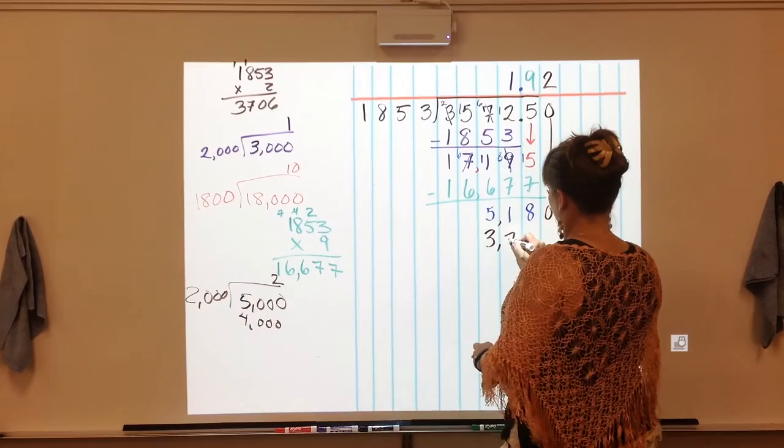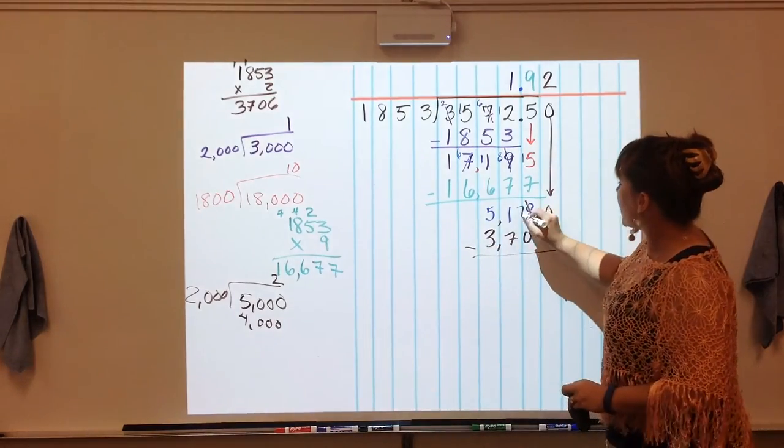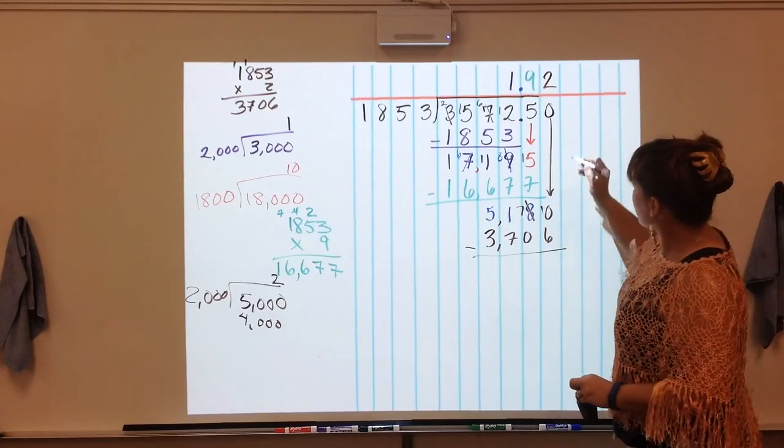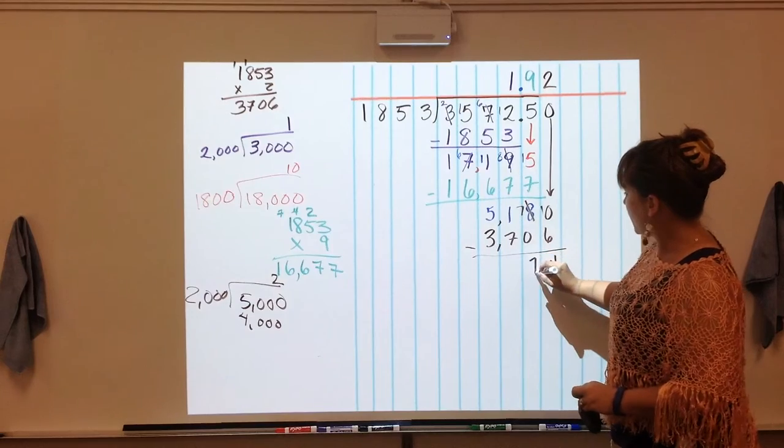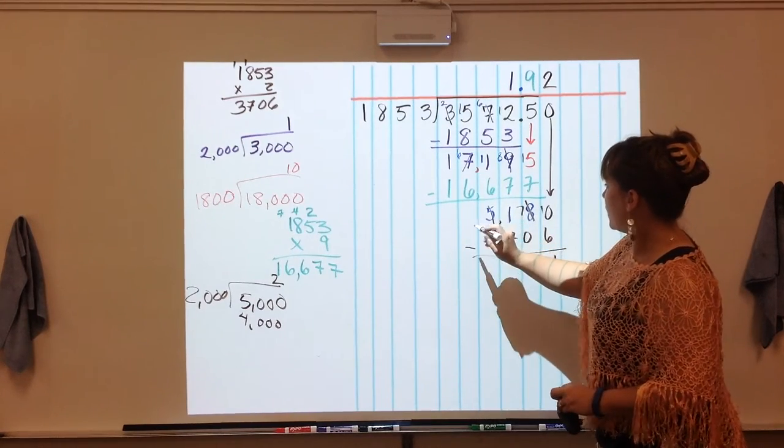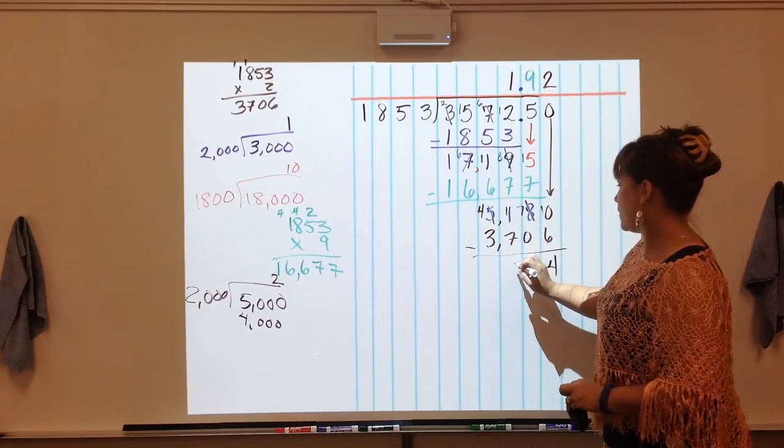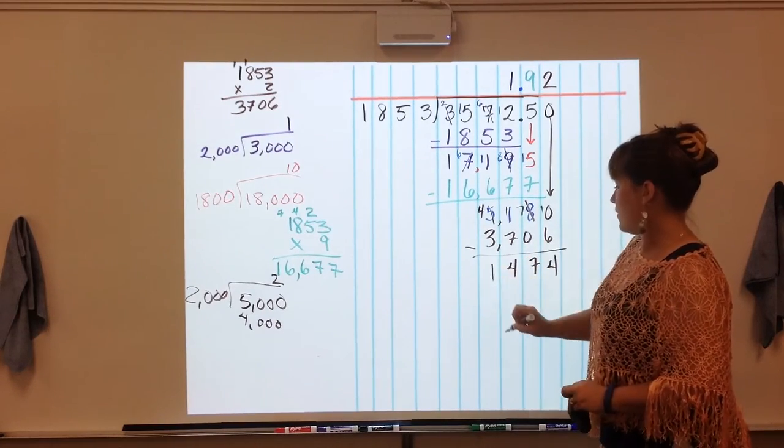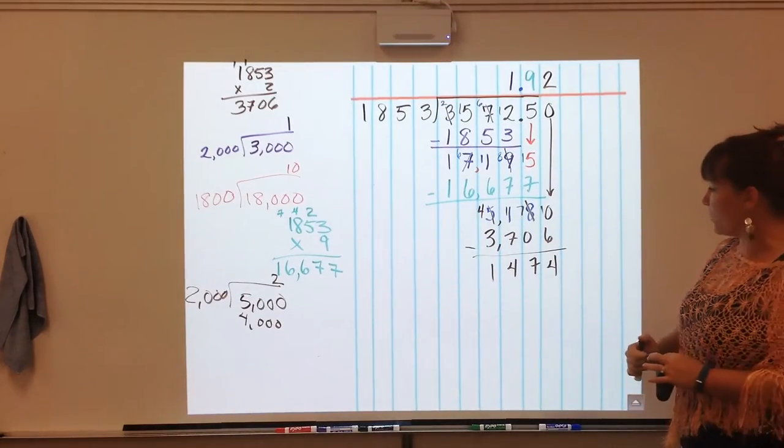That goes underneath here and then subtract just to finish it out. We technically don't need to but let's be precise and accurate as well as we can be. And 11 minus 7 is 4. There we go. 1,474 is our remainder.